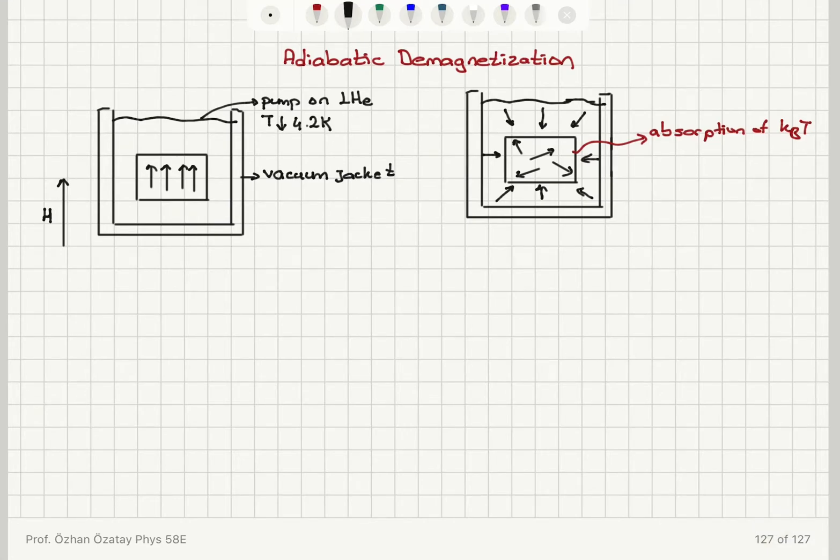So the procedure is cool a paramagnet at 4.2 kelvin. This is by inserting into liquid helium in the presence of a strong magnetic field. So we make sure that it's completely magnetized.